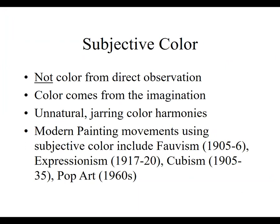Subjective color is what a lot of the modern age has been dealing with. Ever since the turn of the 20th century — for most of the 20th and 21st century — we now have the option to do subjective color in a composition as painters, but also in photography, in design, anywhere it's appropriate. Subjective color is not color from your direct observation of reality. When you look around the room and see colors reflected back to you, that is direct observation. Subjective color is something different — it comes from the artist's imagination.